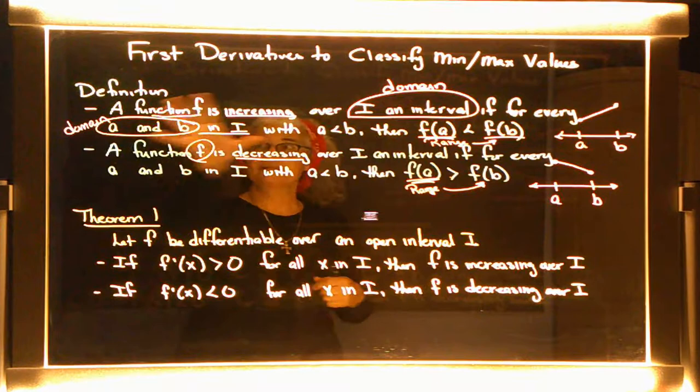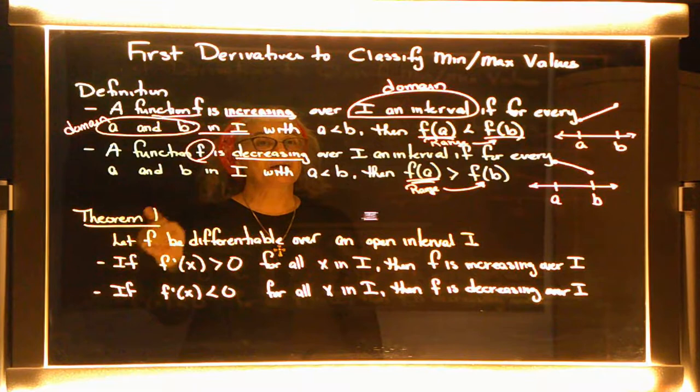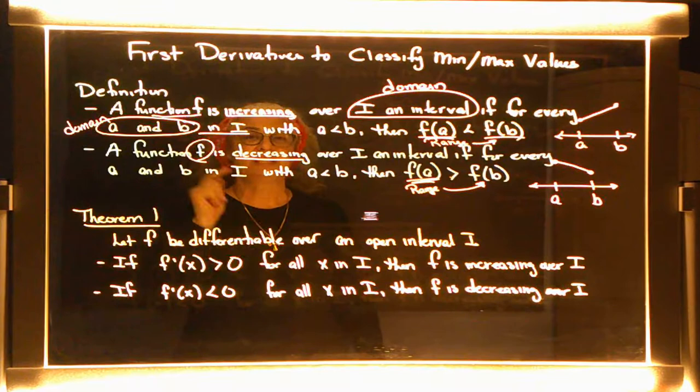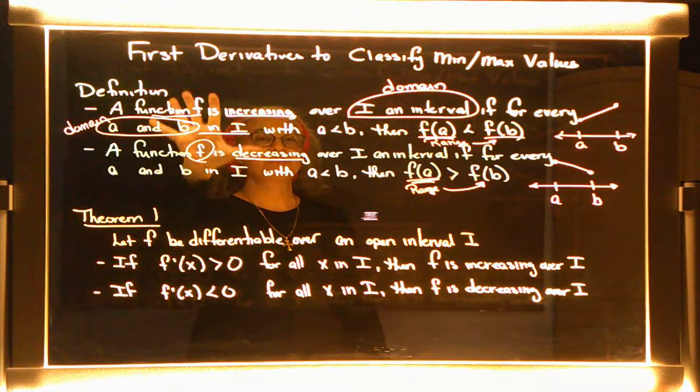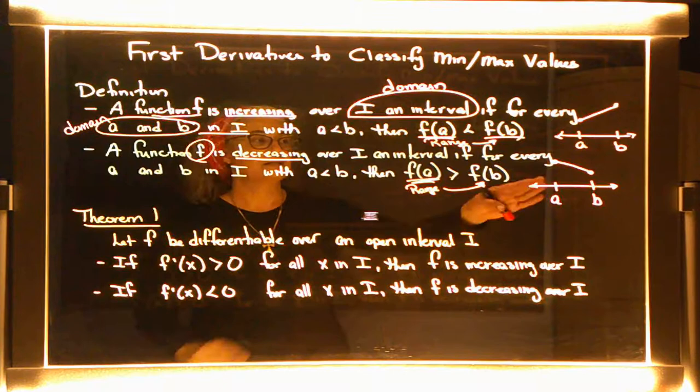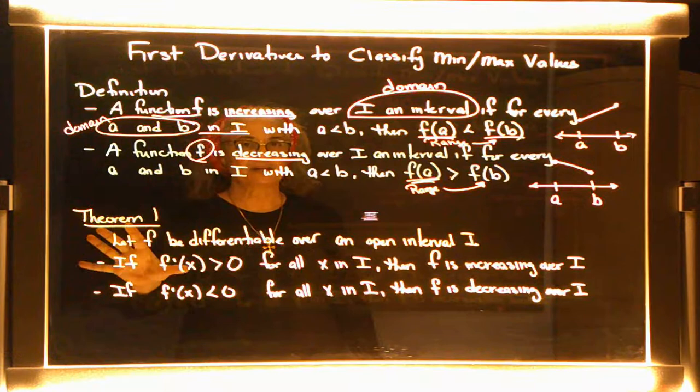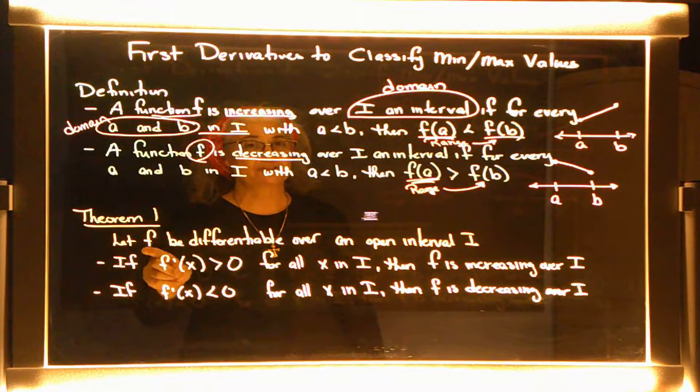This definition leads us into a theorem. This theorem talks about the first derivative and how we can tell — just by looking at the first derivative — whether a function is increasing or decreasing. The definition requires graphing to see it visually, but this theorem, without graphing, will tell us if a function is increasing or decreasing just by looking at the first derivative.